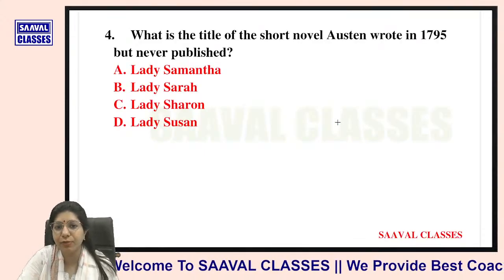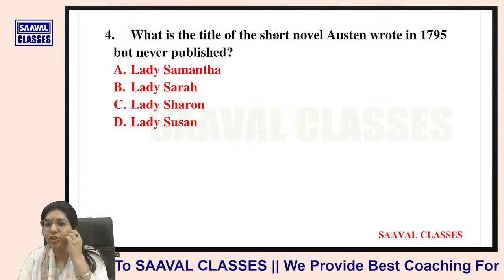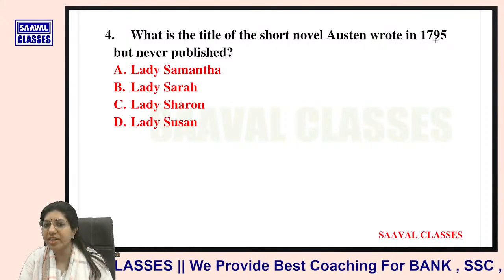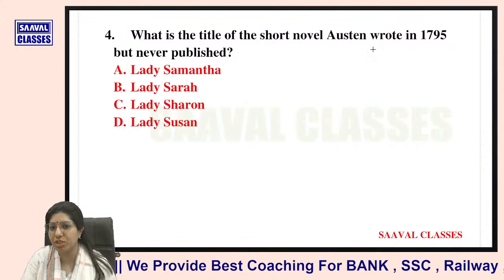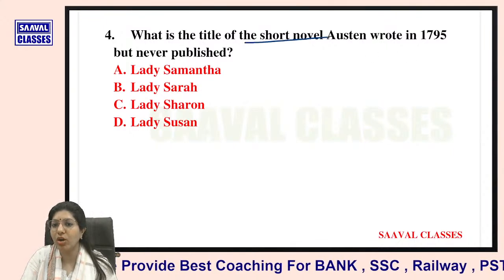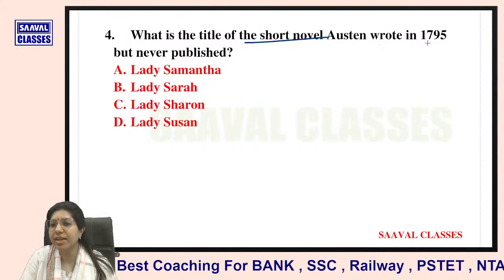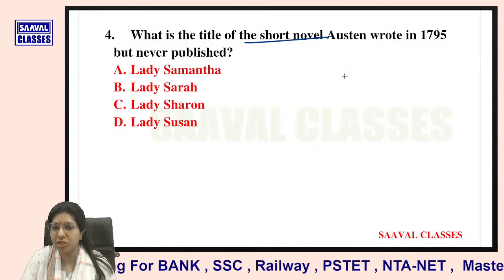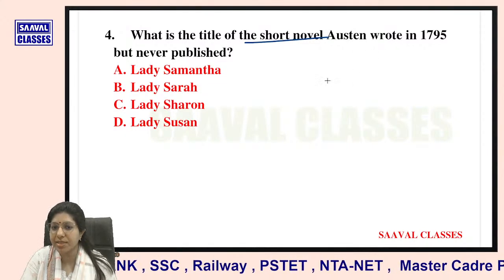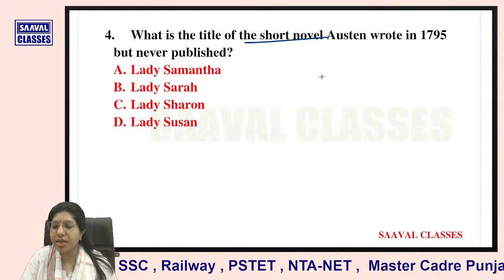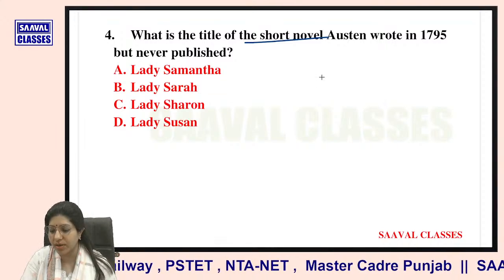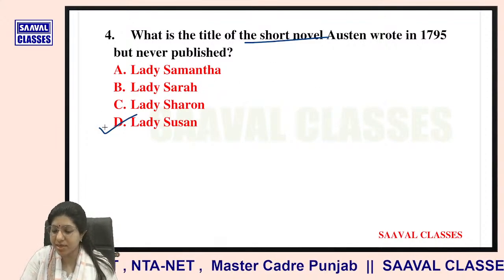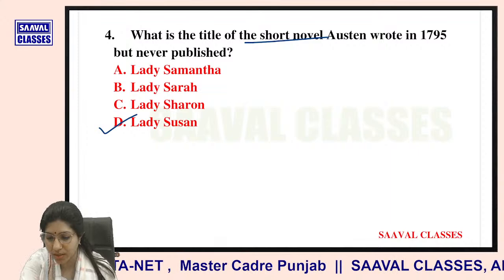Question number four: What is the title of the short novel Jane Austen wrote in 1795 but never published? Options are Lady Samantha, Lady Sarah, Lady Sharon, or Lady Susan. The answer is Lady Susan — very right.